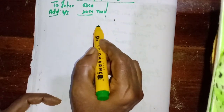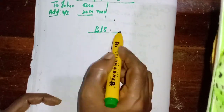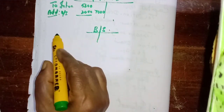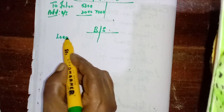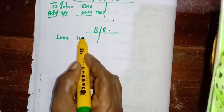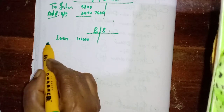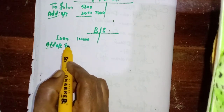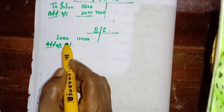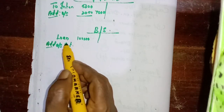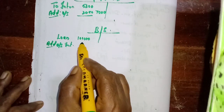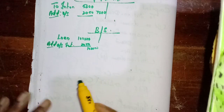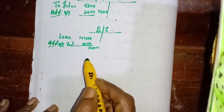Again in the balance sheet, we have to show that loan along with the loan. The loan amount is 1,00,000. In the inner column we have to write, then add outstanding interest on loan — 2,000 — so the total is 1,02,000. This is the presentation.